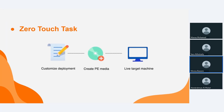The second method is zero touch task. This deployment method is used to deploy an OS image to a target computer without any physical contact — that's why it's called a zero touch task. We make the deployment using automated booting and deployment. There are two prerequisites before using zero touch task: the target machine must be live with an OS, and the computer must have the agent installed. If these two prerequisites are met, it's easy to use zero touch task — you customize the deployment, select a deployment template, create PE media, and then select the live target machine to deploy the image.